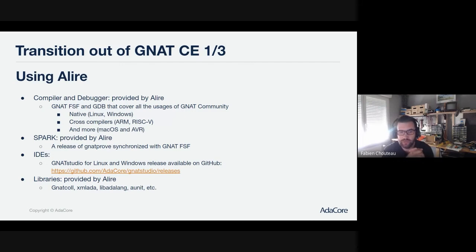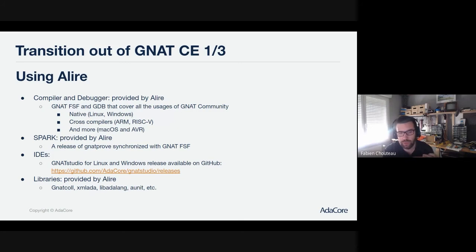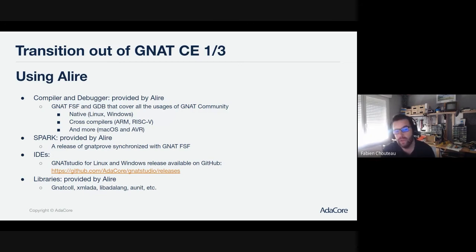For IDEs, there is now a special release of GNAT Studio available in the GitHub repository. We will do probably at least one release per year, maybe more, that you can download from there. As of today, Alire will not download and install GNAT Studio — unlike for the other tools — but maybe that's something we can do in the future. For libraries you used to get from GNAT Community, that's exactly what Alire is designed to do. With Alire you can declare a dependency on GNATColl, XMLAda, LibAdaLang, and so on, and they will be fetched and built automatically.